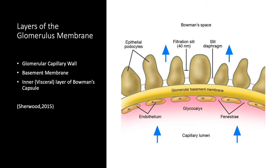The narrow slits between the interdigitating secondary foot processes of adjacent podocytes are known as filtration slits, which provide a pathway through which fluid leaving the glomerular capillaries can enter the lumen of Bowman's capsule. The route that filtered substances take across the glomerular membrane is completely extracellular: first through capillary pores, then through the acellular basement membrane, and finally through the filtration slits. Some renal diseases characterized by excessive albumin in the urine result from disruption of the negative charges within the basement membrane, making the glomerular membrane more permeable to albumin even though the size of the capillary pores remains constant.